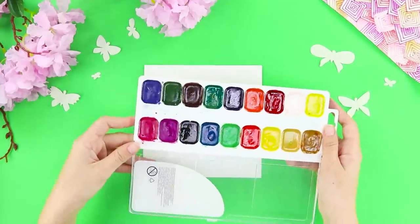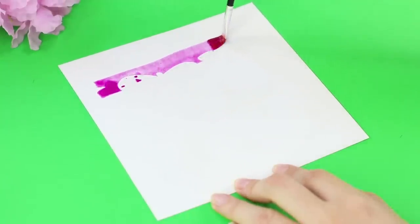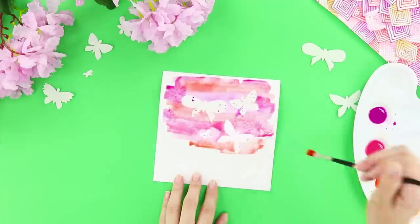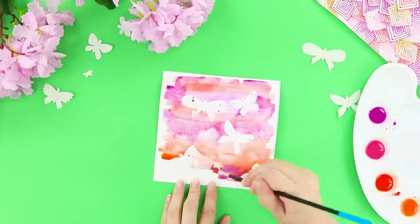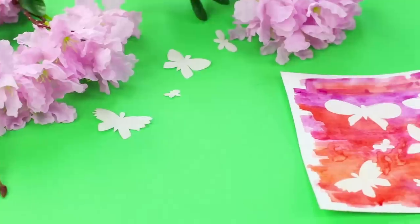Next, take watercolors and a wide brush. Dilute the paint with water. And draw a gradient background. Make one strip red and the next strip pink. Spread the paint on paper. And since the butterflies are slippery, the paint goes around them. And the result is a picture like this. Simple, but with style. And with butterflies!